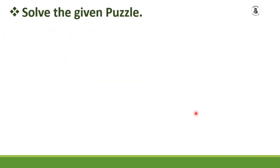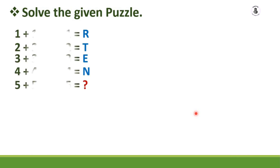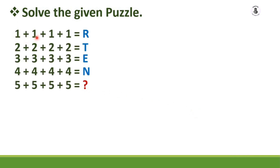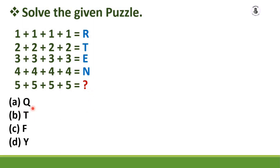Next question — solve the given puzzle: 1+1+1+1+1 = R, 2+2+2+2 = T, 3+3+3+3+3 = E, 4+4+4+4 = N, and 5+5+5+5 = what? The options are: A) Q, B) T, C) F, D) Y. I will give 10 seconds to solve the problem.